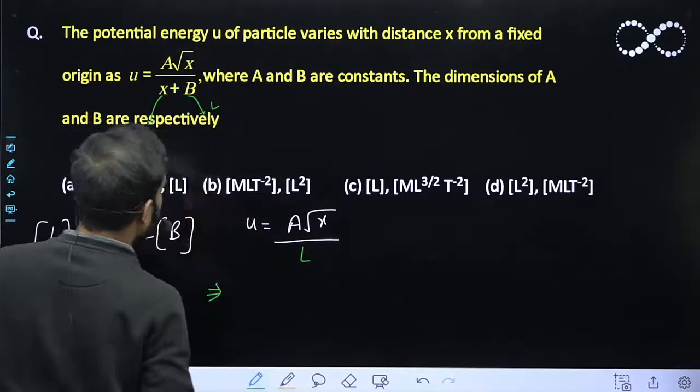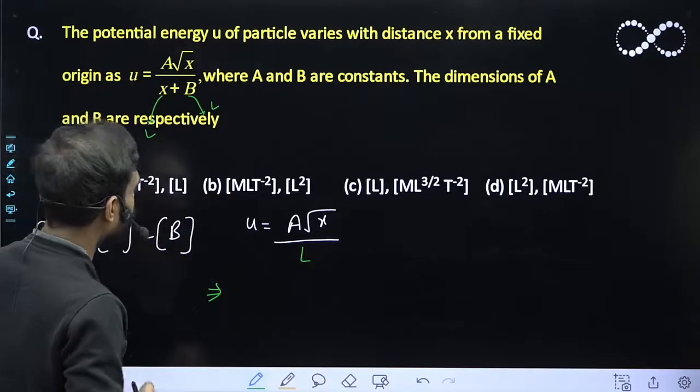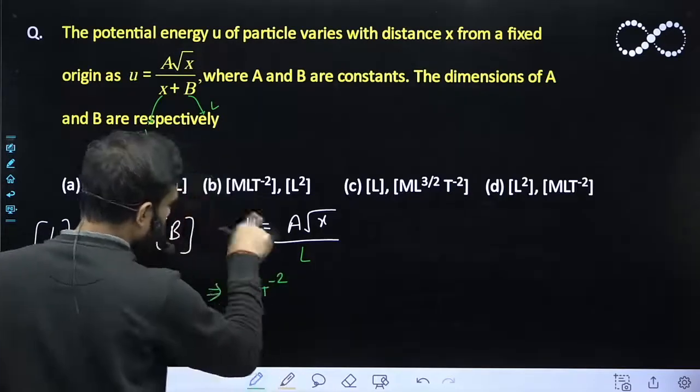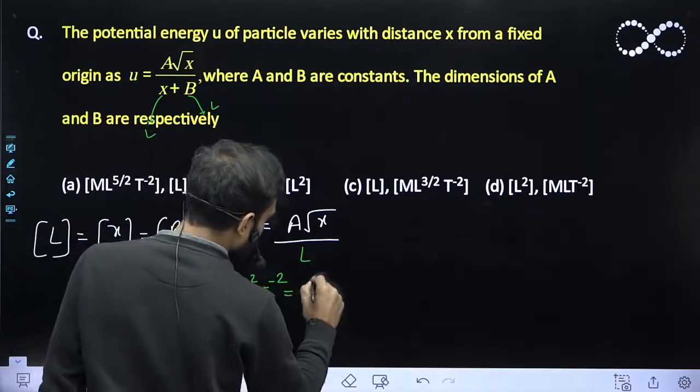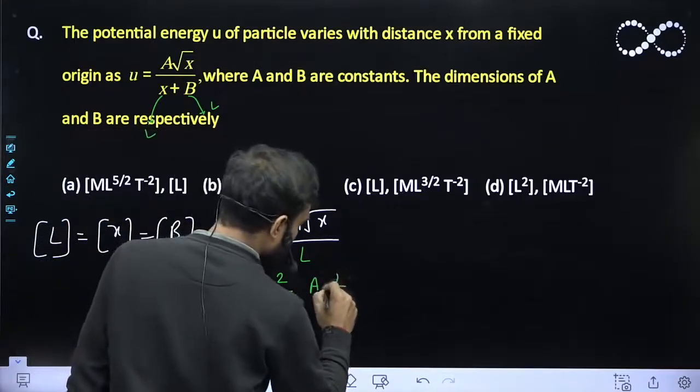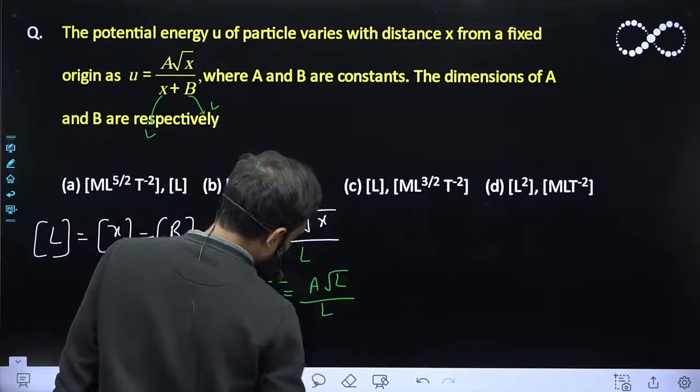In this question it is given u is the energy. The dimension of energy is ML² T⁻². So this dimension of energy equals A times root x, that is dimension of root L, divided by L.